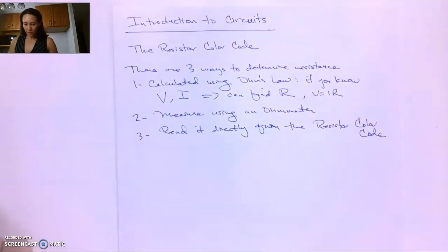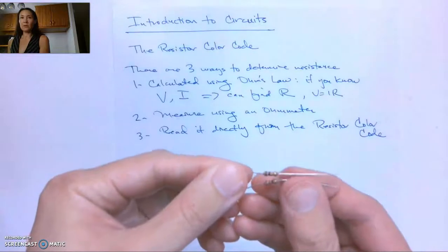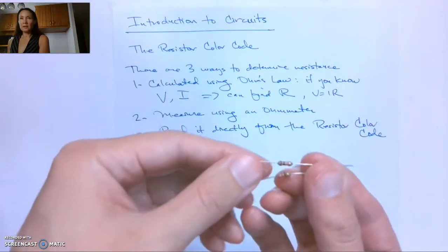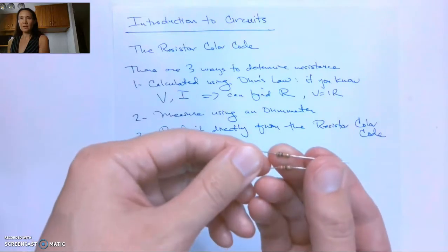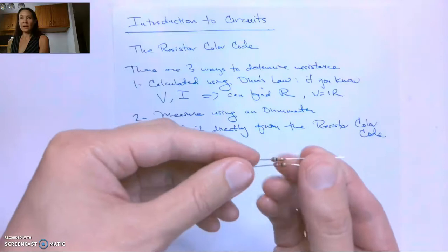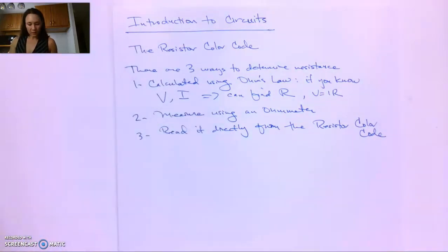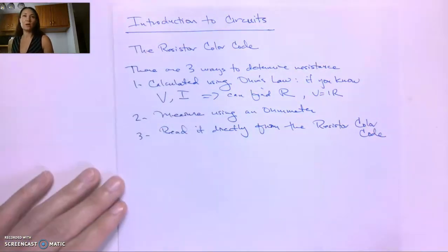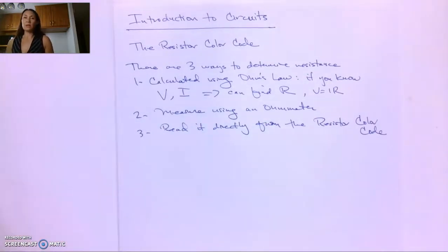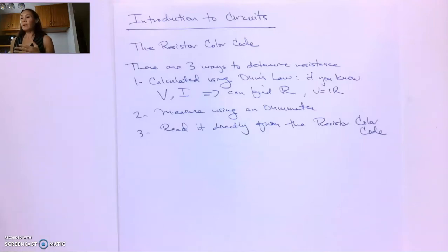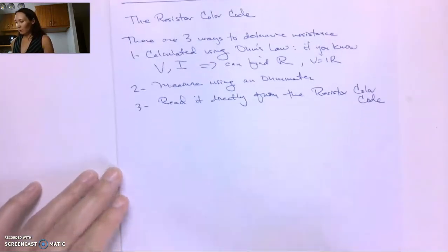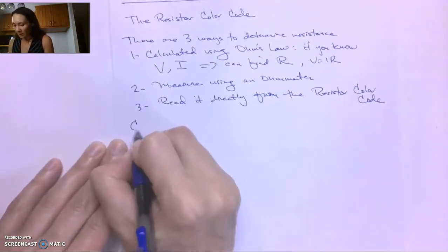Let me show you — I have two resistors here, and you can see that the color bands are different between these two resistors. The manufacturer has encoded the value of these resistors in these bands, so we need to know how to decode that to read the theoretical value of the resistor. We say theoretical value because this gives us a range of resistances that the exact resistance will fall within. To find the exact resistance, it's better to measure using an ohmmeter, but reading from the resistor color code is also useful.